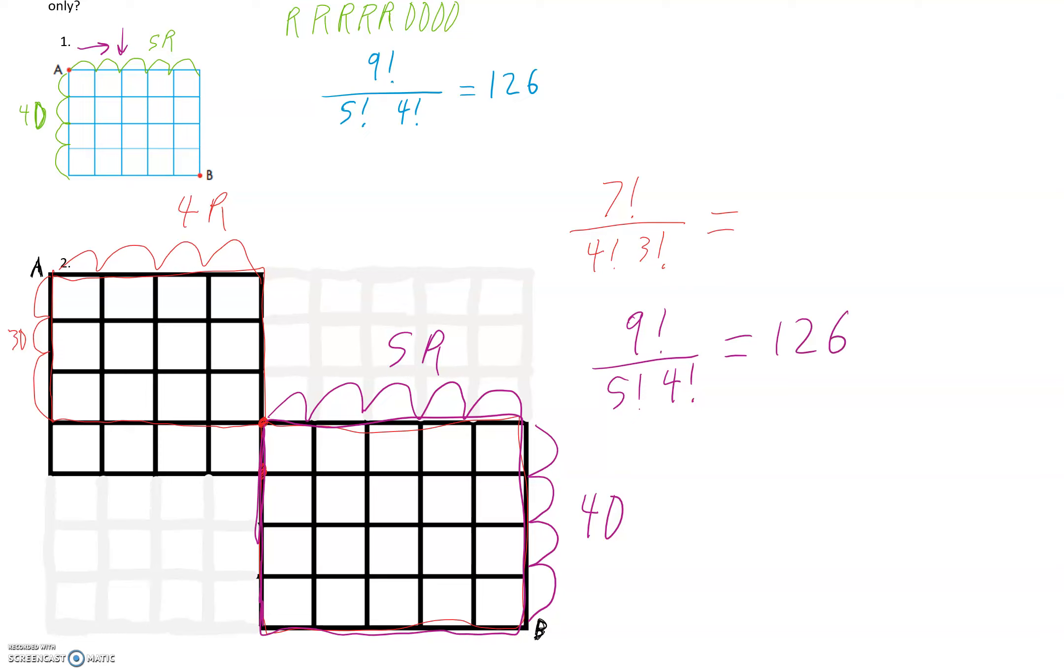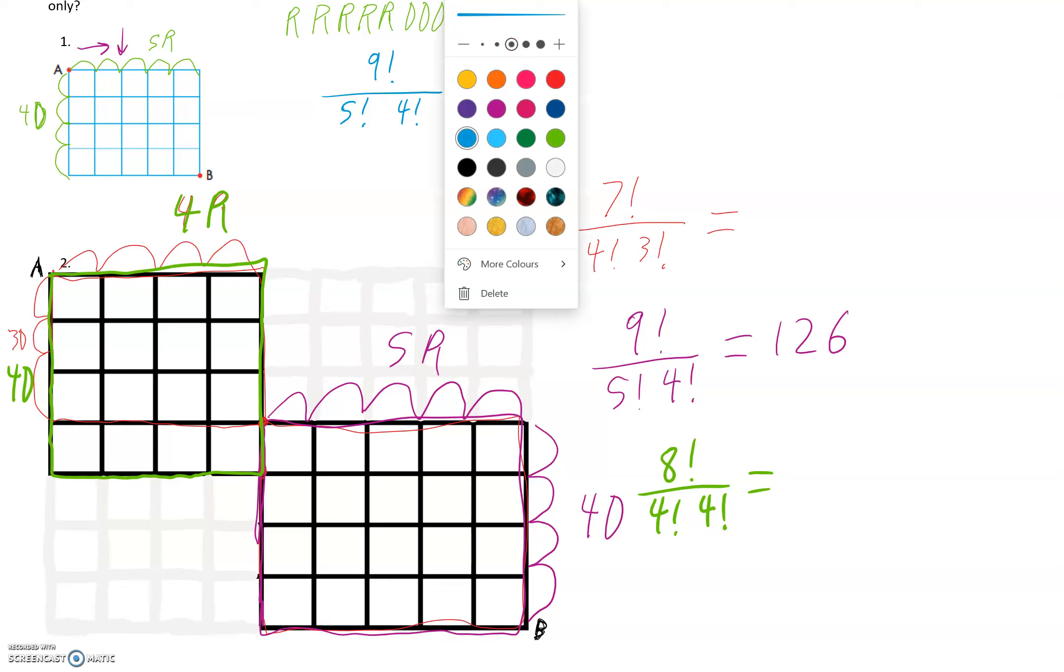Another situation is, what if we went down all the way and took this entire path? So now we have four down and four to the right. So this is 8 factorial over 4 factorial times 4 factorial. And then that means we'd have to start at the bottom corner down here. So we'd only have three and five. So it would be 8 again and 5 factorial and 3 factorial.